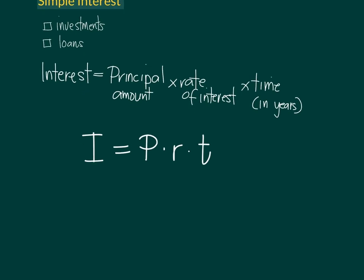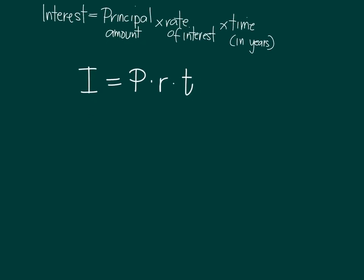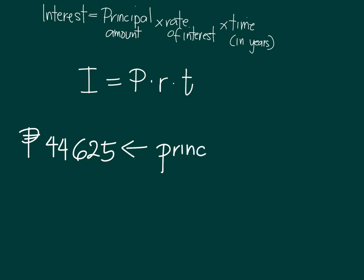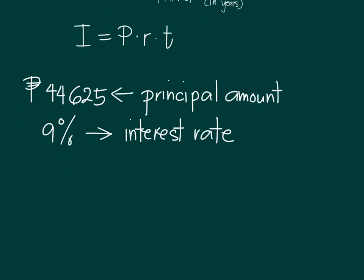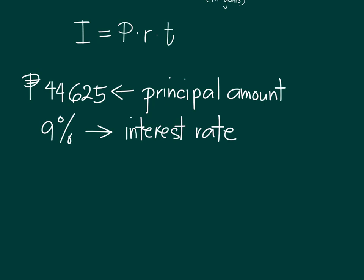Let's take an example. Suppose you are investing an amount of $44,625. This is your principal amount, and under this investment your money will grow at the rate of 9%. That is the interest rate. Note that you are investing, so you expect your money to grow after a period of time.